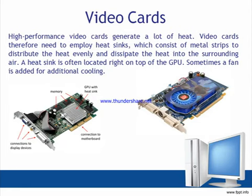High-performance video cards generate a lot of heat, so they employ heat sinks — metal strips that distribute and dissipate heat into the surrounding air. A heat sink is often located right on top of the GPU, and sometimes a fan is added for additional cooling. You can see two different video cards on screen: one is a low-performance card, the other is a high-performance card. A high-performance video card has a fan on its top, which helps it cool down when necessary.